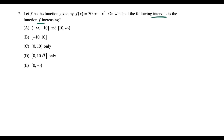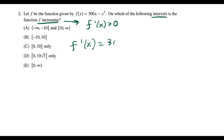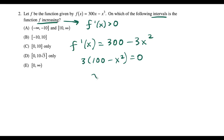For question two, we're looking for intervals where f is increasing. When I hear 'f is increasing,' I think f'(x) must be positive. They gave us f(x), so we find f'(x) = 300 − 3x², using the power rule. Setting this equal to zero and factoring out 3 gives 3(100 − x²) = 0, with roots x = ±10.